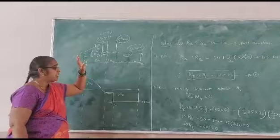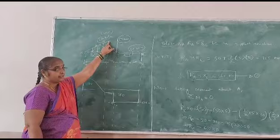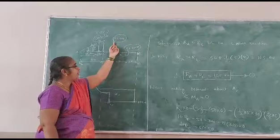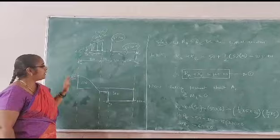Here in this beam we have a uniformly varied load of 30 kilonewton per meter over a span of 5 meter and one point load of 50 kilonewton and another couple 50 kilonewton meter.